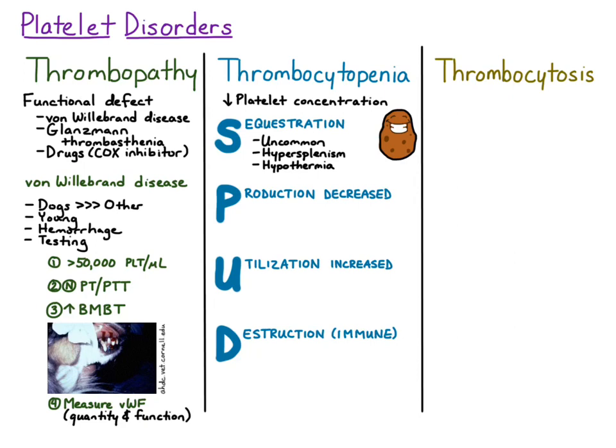For decreased production of platelets, those are the same causes that cause generalized marrow hypoplasia. For those causes, go back and review the erythroid hypoplasia lecture.